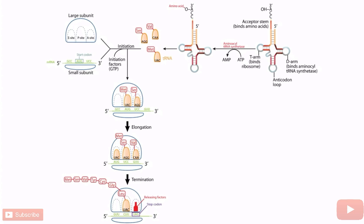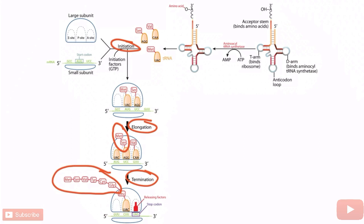Protein translation occurs in three steps: initiation, elongation, and termination. Elongation is when the polypeptide begins to grow — amino acids are linked together into a long chain. Elongation factor 2 is a factor necessary for elongation to occur. Therefore, exotoxin A disrupts this process, resulting in inhibition of protein synthesis and ultimately cell death. EF2 promotes elongation, and exotoxin A disrupts this process.